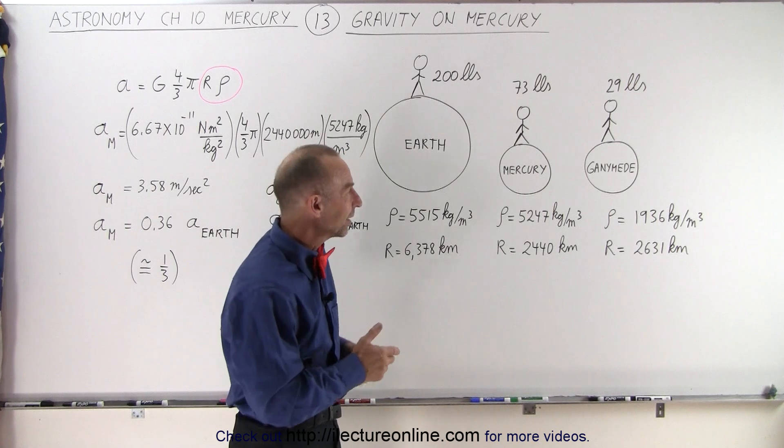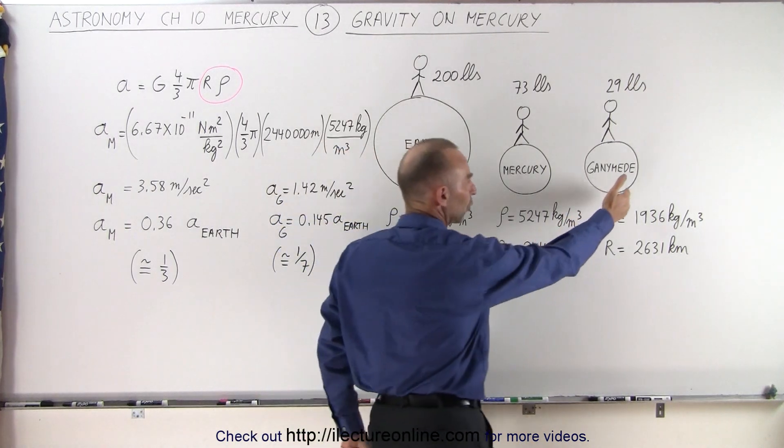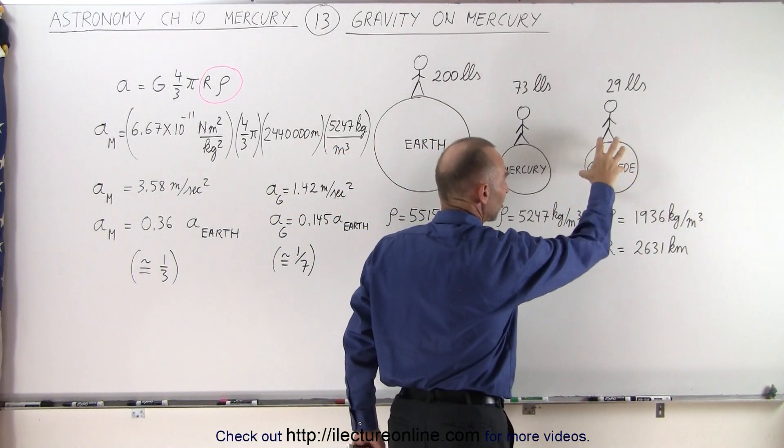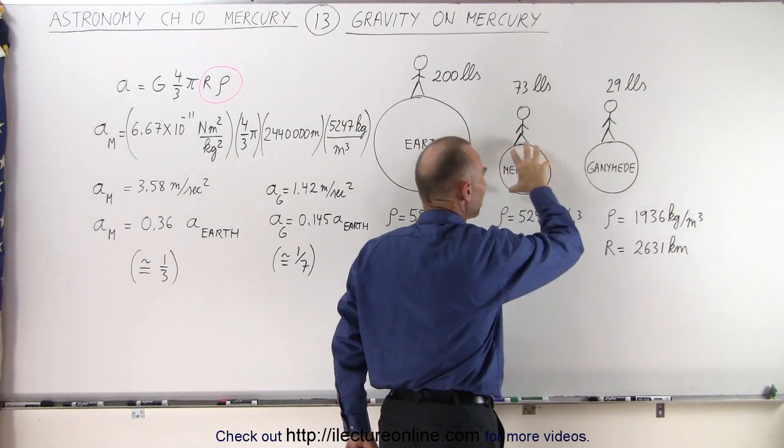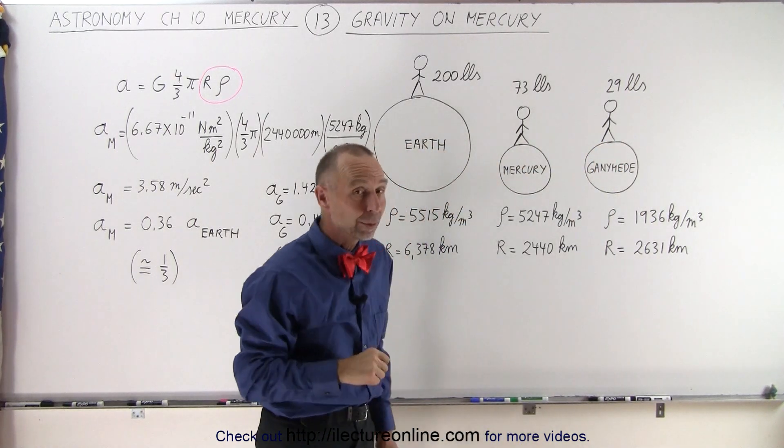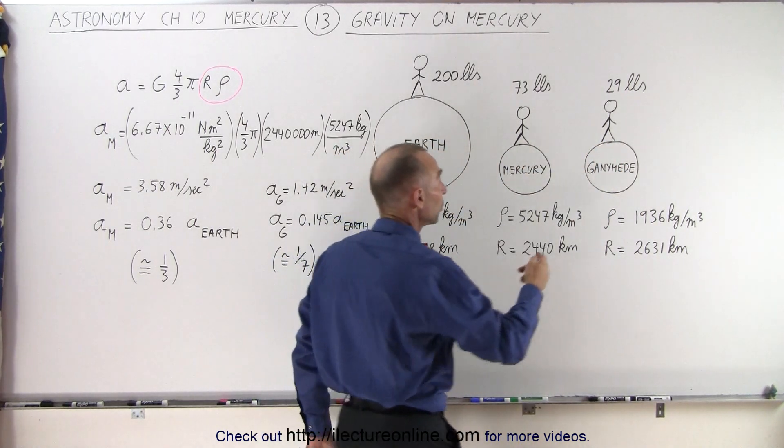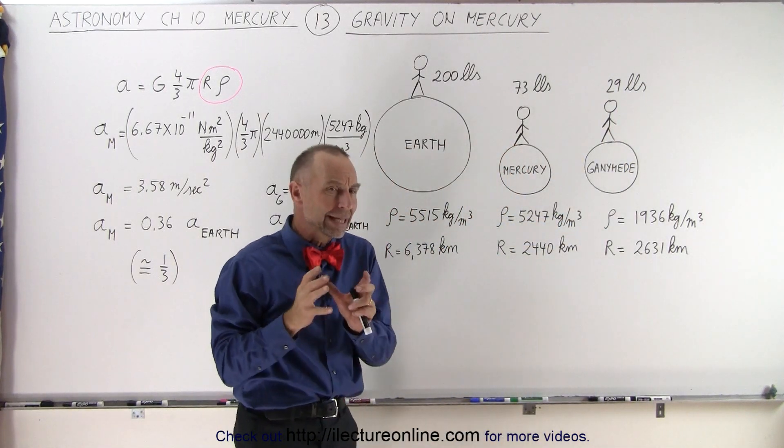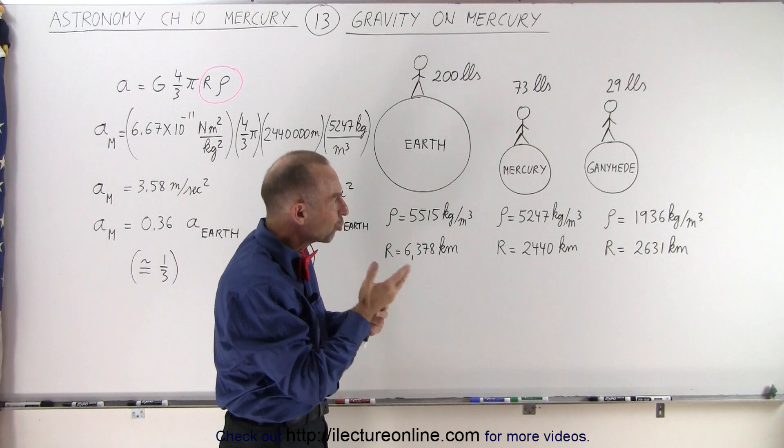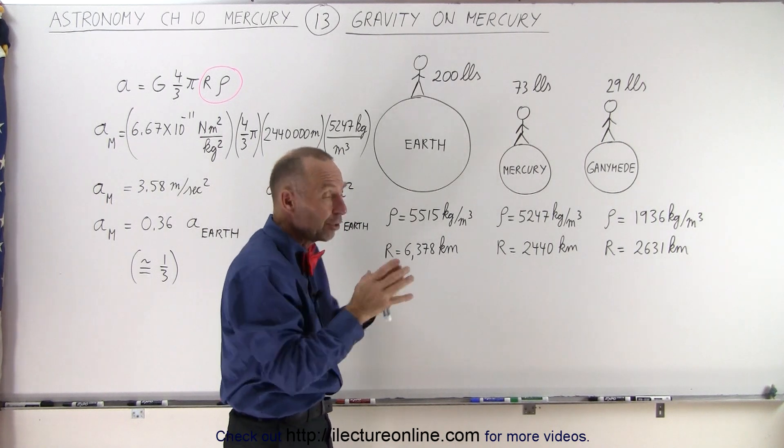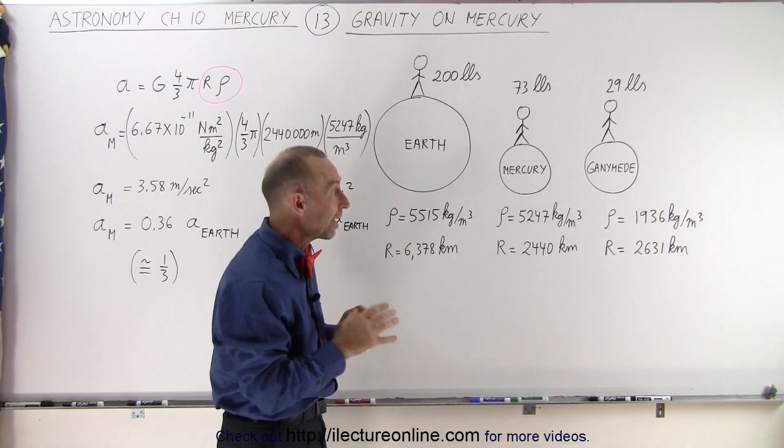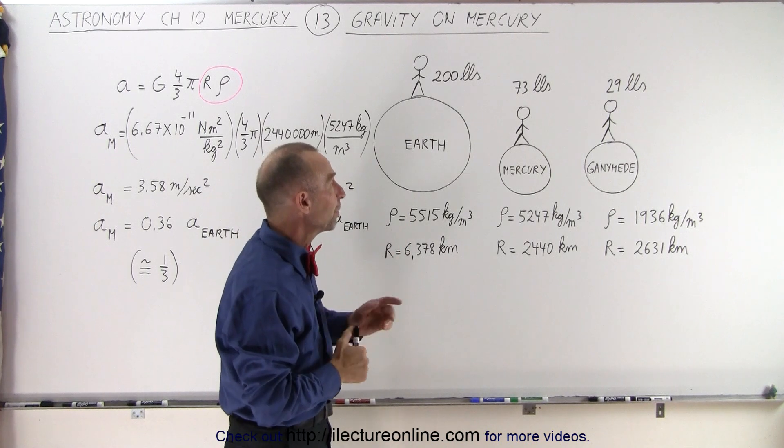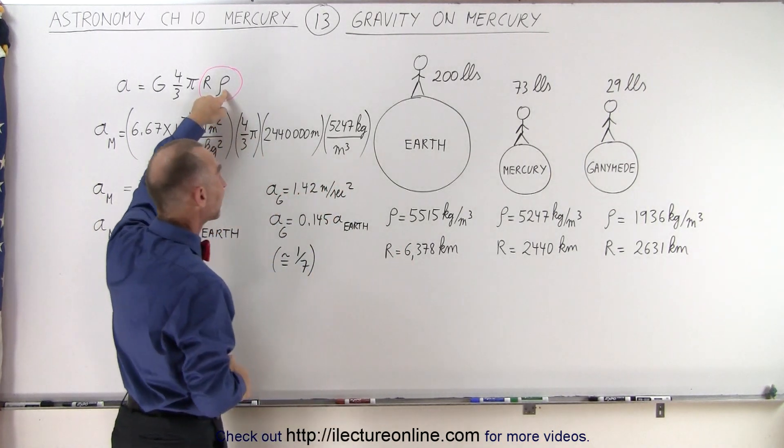And for comparison, let's take a look at the largest moon in the solar system, Ganymede, which is slightly larger in diameter compared to Mercury. But on Ganymede, that same person would only weigh 29 pounds. That is because the density of Ganymede is much smaller than the density of Mercury. So even though they're comparable in size, your weight would be much less because it has a much smaller density.